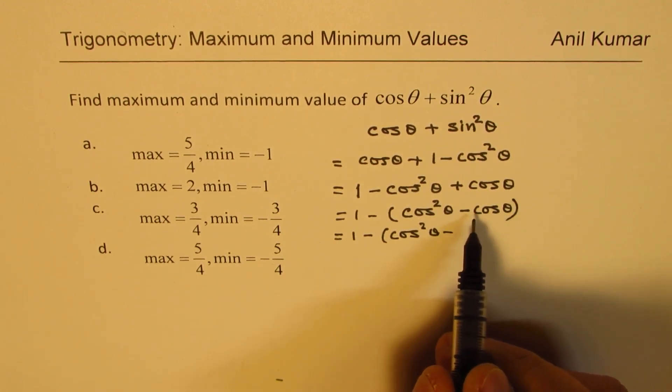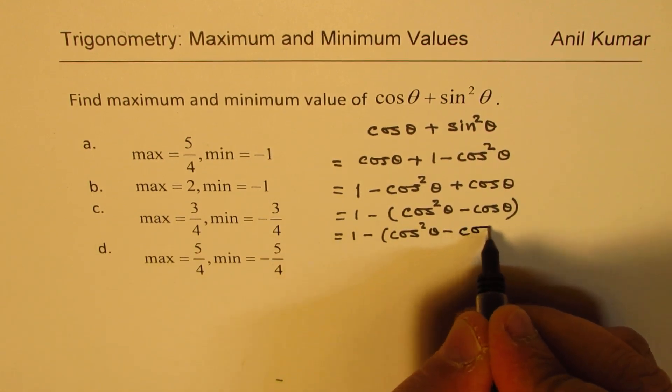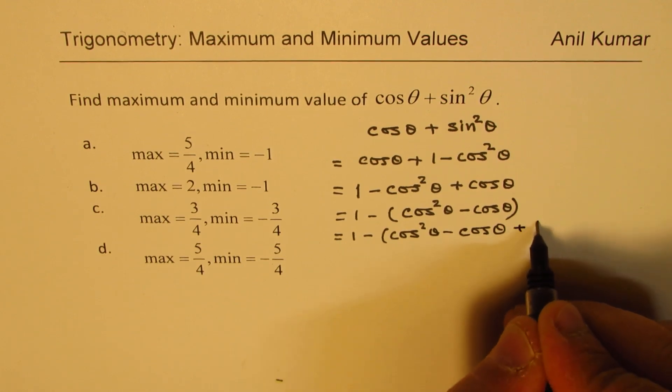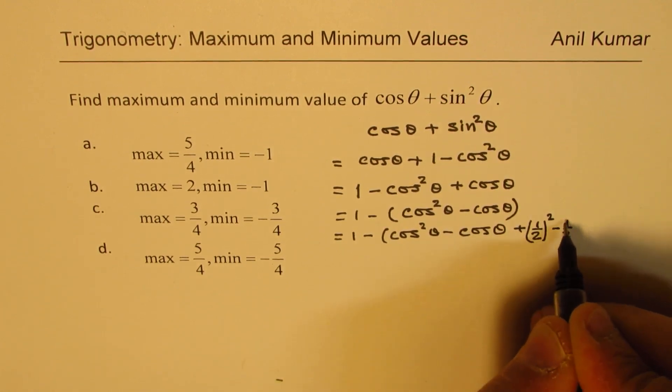Well to make this a perfect square with coefficient of cos θ as 1, we have to add and subtract (1/2)². So we can write this as (cos θ - 1/2)² minus (1/2)².